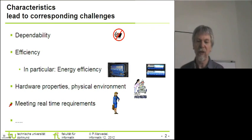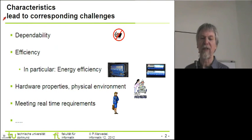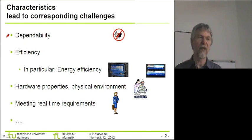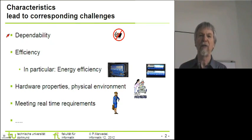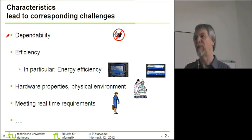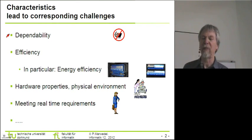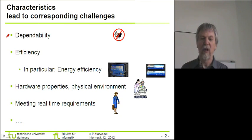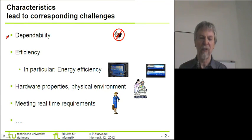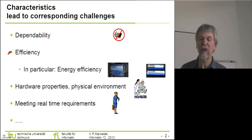The new issue today is that all these characteristics are leading to corresponding challenges. That means if we are seriously taking the required dependability into account, we have to make sure that the overall system will be dependable as required. That might have an impact on the physical partitioning, for example, or on the specification technique. I think in general it can hardly be overemphasized how important it is to take required dependability levels into account right from the beginning. The same applies to the required efficiency — for example, if we have a portable system.